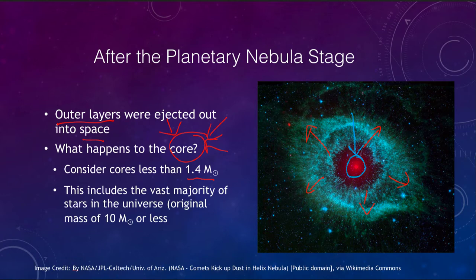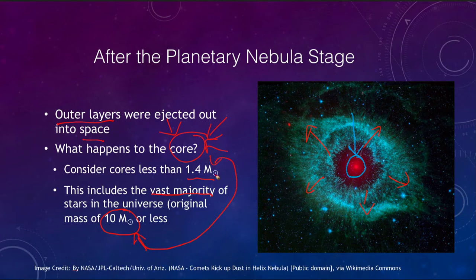This 1.4 solar mass limit is very important and has to do with the stability of the remnant left behind. Anything more than 1.4 solar masses and something different is going to happen, which we will look at later on. This limit covers the vast majority of stars in the universe, meaning stars with 10 solar masses or less will be able to lose enough material that the remnant left behind will be under this 1.4 solar mass limit.